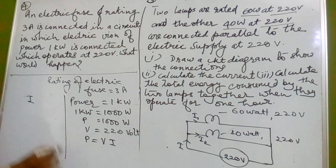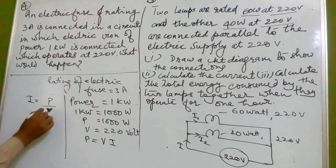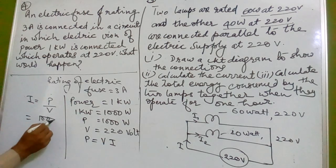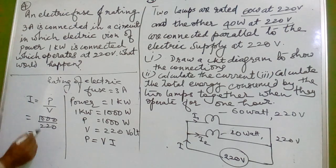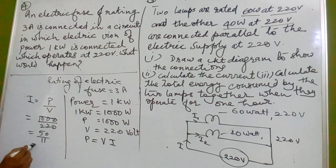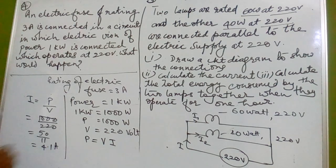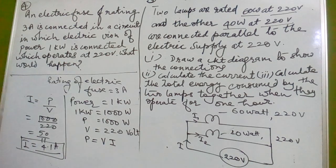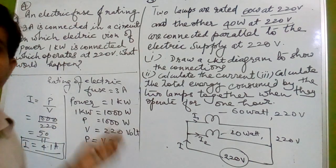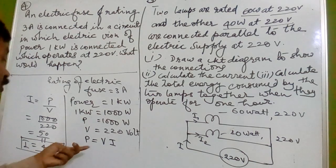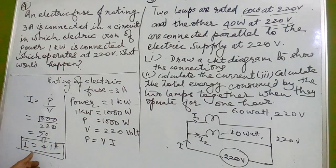We want to find the current, which is given by I = P/V. Current = 1000 divided by 220 volt, which is 50 upon 11, approximately 4.1 ampere. So the current drawn by the electric iron when connected to the device is 4.1 ampere.